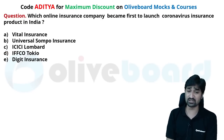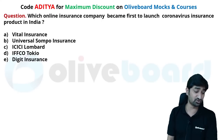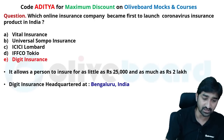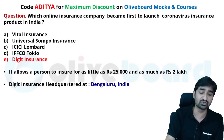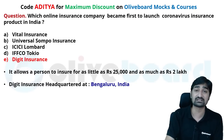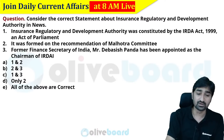Which insurance company became the first to launch a coronavirus insurance product in India? The correct answer is Digit Insurance, headquartered in Bangalore. Recently, Jasleen Kohli has been appointed as the Managing Director of Digit Insurance. Consider the correct statements about IRDAI: IRDAI was formed according to the Act of 1999, on the recommendation of the Malhotra Committee. Former Financial Services Secretary of India, Devashish Pandasar, has been appointed as the chairperson of IRDAI recently.